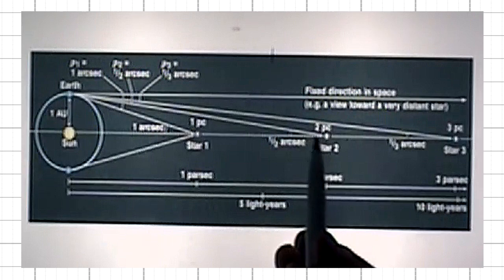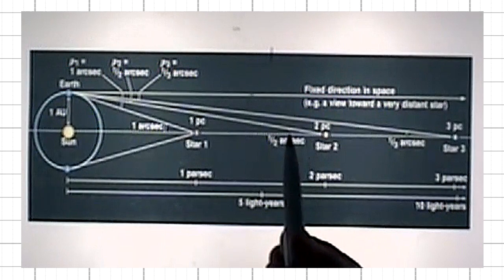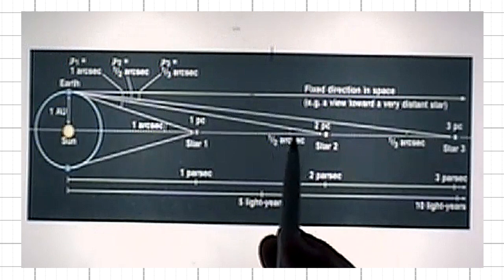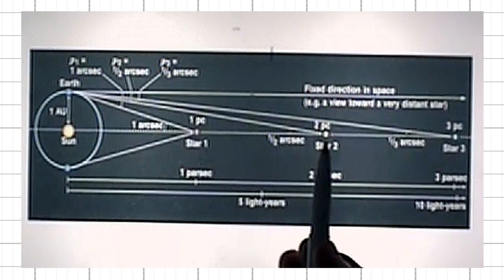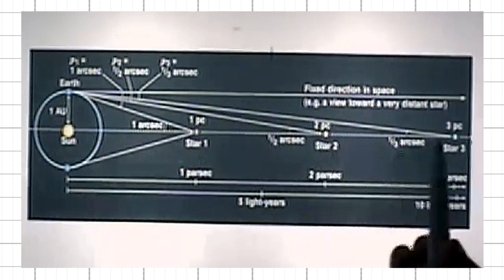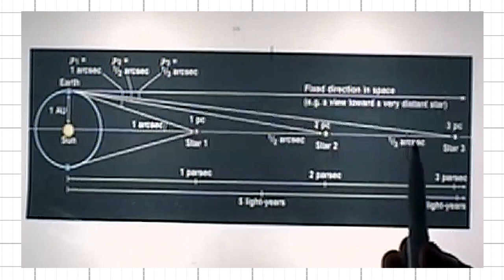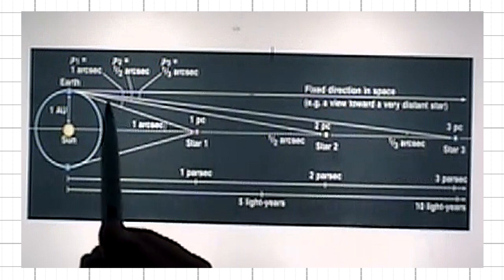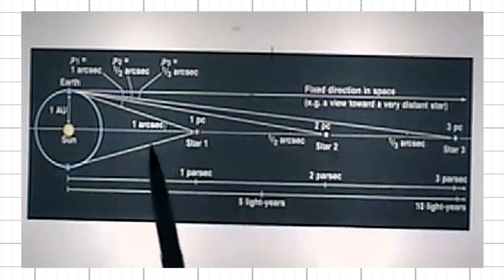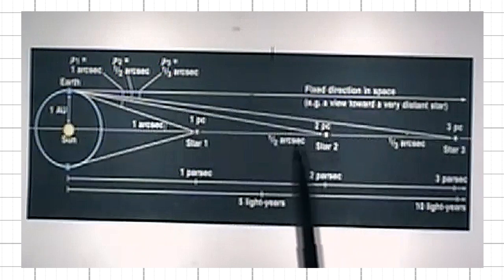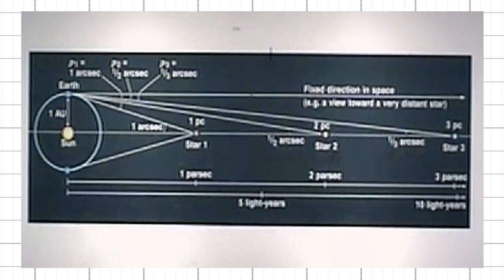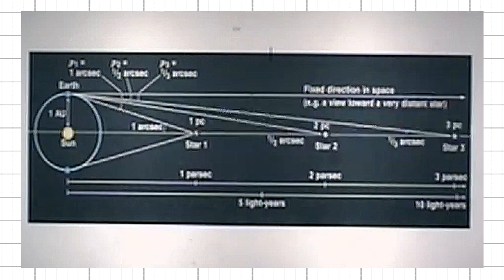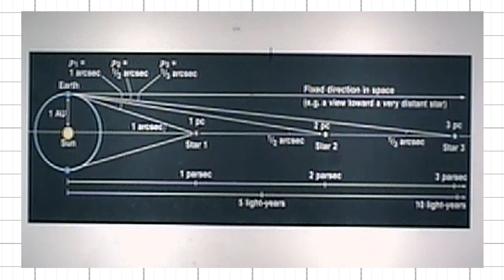For star that is seen at the parallax angle, half of this value, one-half of arc second, one over one-half is two. The distance of star number two would be two parsecs. For this one here, the parallax angle is one-third of the arc second. One over one-third is three. This one here is at the distance of three parsecs. You see, as the distance to the star increases, the parallax angle gets smaller, and they are just inversely proportional to each other.